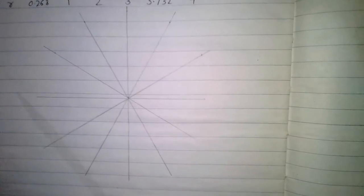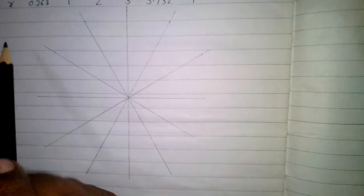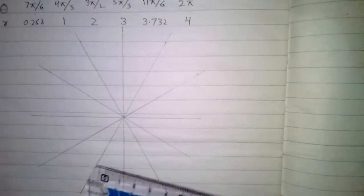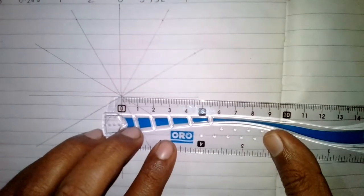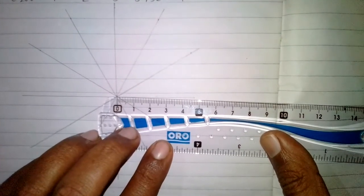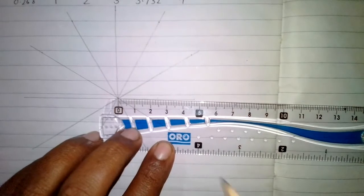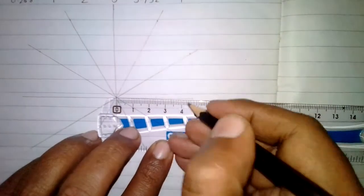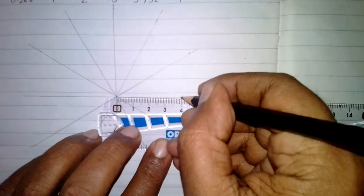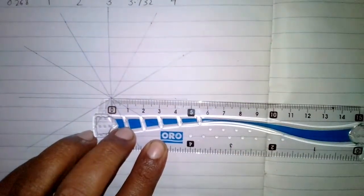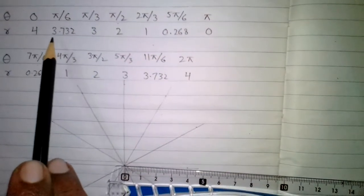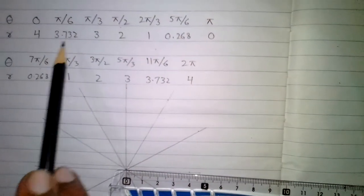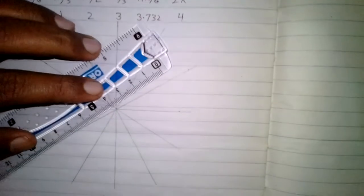First we take the value of r which is 4 at 0 degrees or 0 radians, and we plot that point on the graph. Then at pi by 6 we take the value of r equal to 3.732 and plot that point.